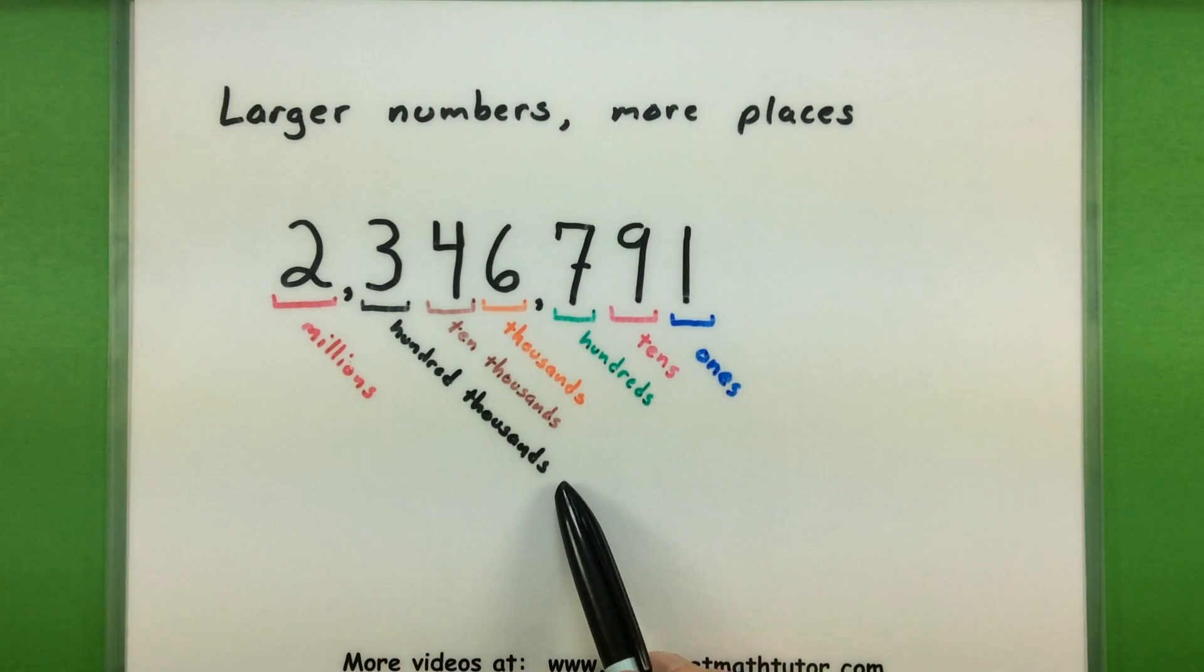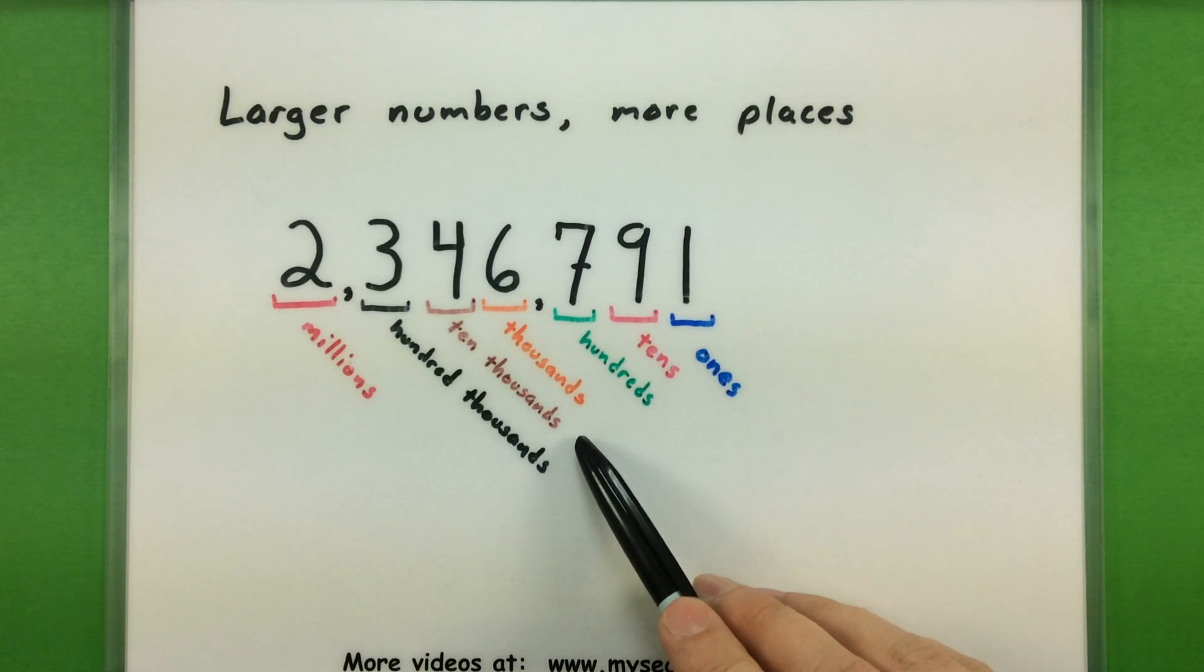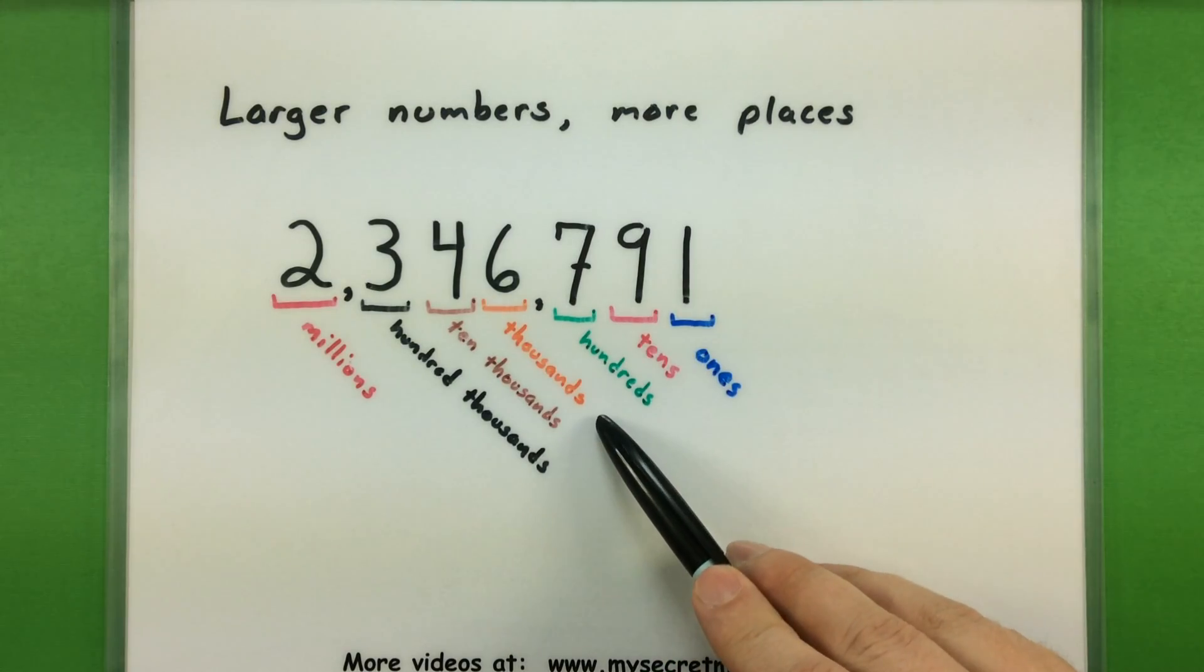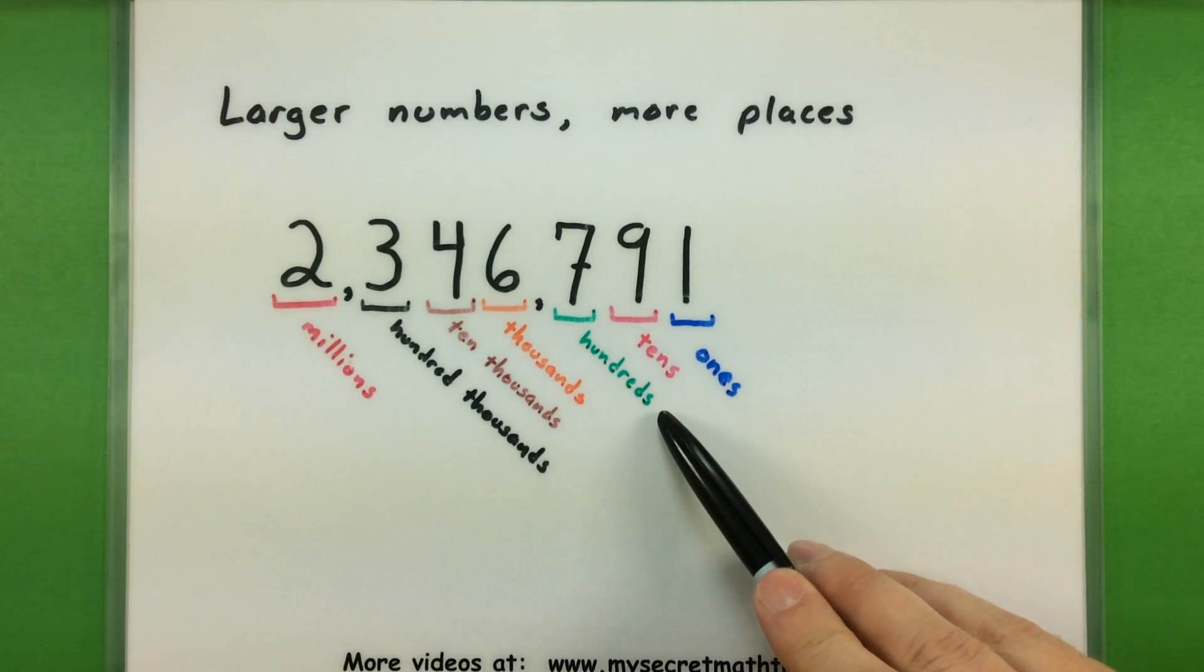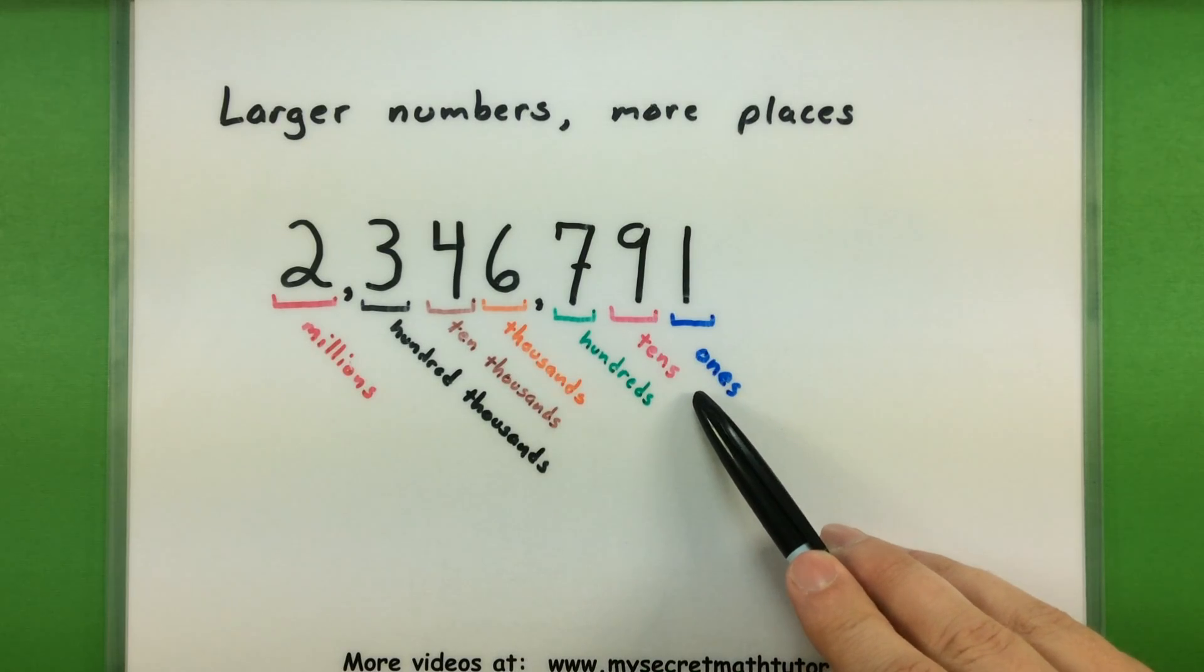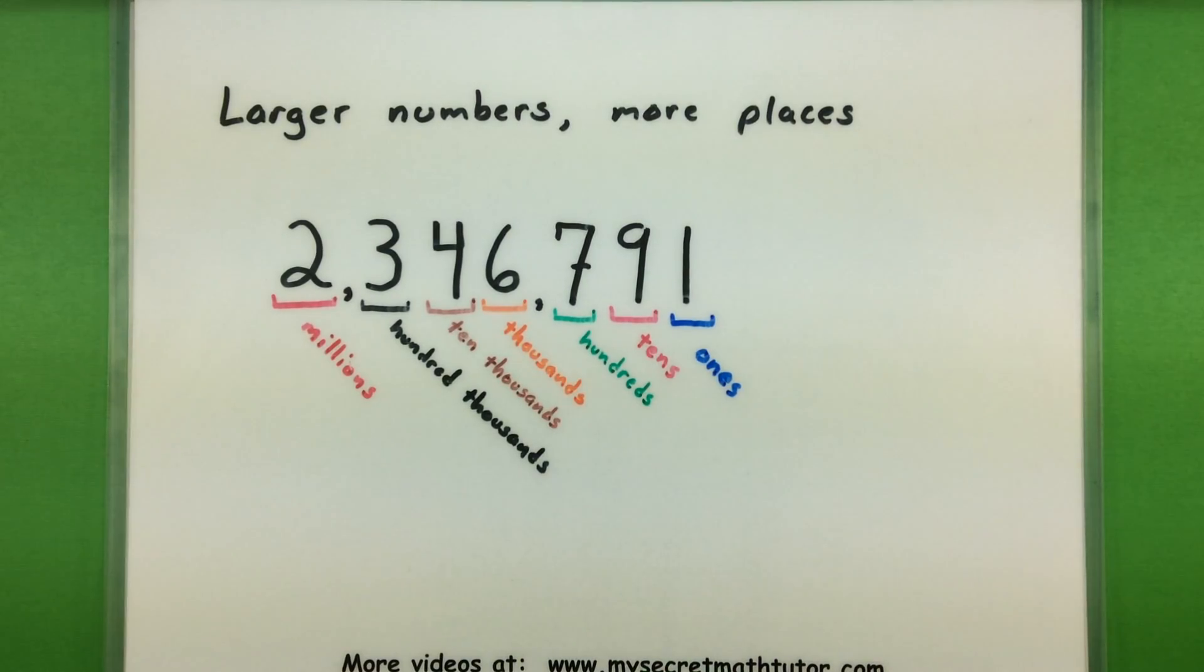The 2 is in the millions, the 3 is in the hundred thousands, the 4 is in the ten thousands, 6 is in the thousands, 7 is in the hundreds, 9 is in the tens, and 1 is in the ones place.